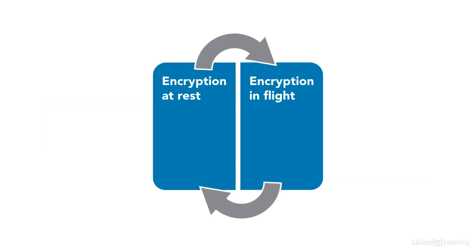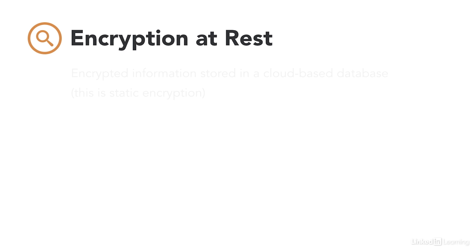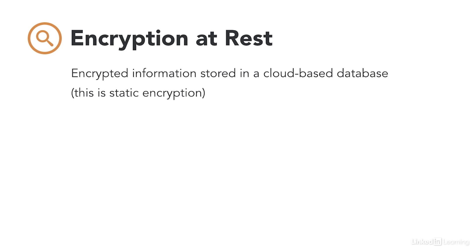We have two types of encryption: encryption at rest and encryption in flight, and obviously they work together. Encryption at rest means that we're encrypting information that is physically stored in a cloud-based database — either encrypting the information as it's laid down within a storage system such as S3, or encrypting it as it moves in and out of a database. Encryption can be either dynamic or static. We can encrypt everything that moves in and out of a database through one single batch process which may occur on a nightly basis — that's static in nature. That's the old-school approach.